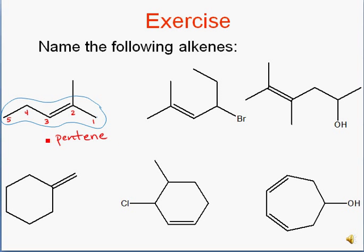My alkene begins at carbon 2, so I put a 2 in front of the name stem. At carbon 2 I also have a methyl group. So this one is named 2-methyl-2-pentene.